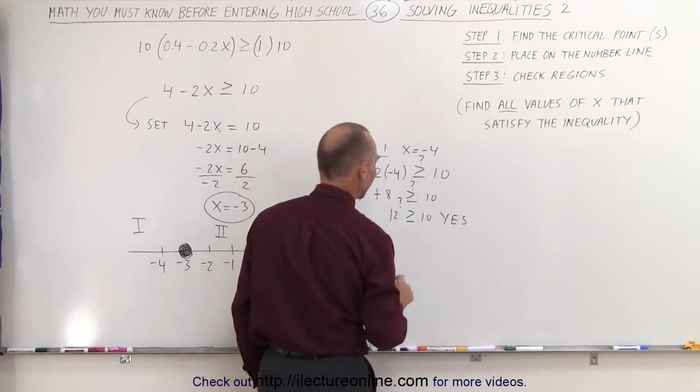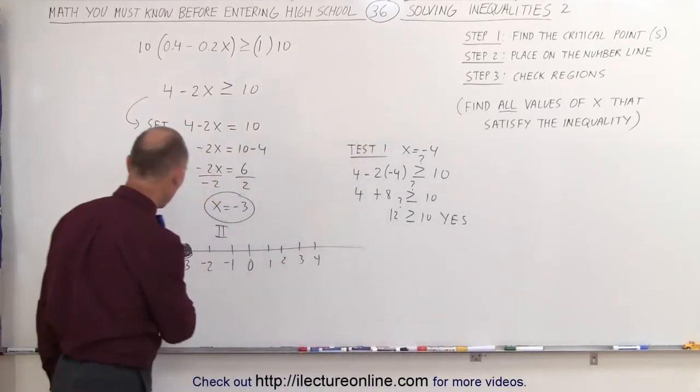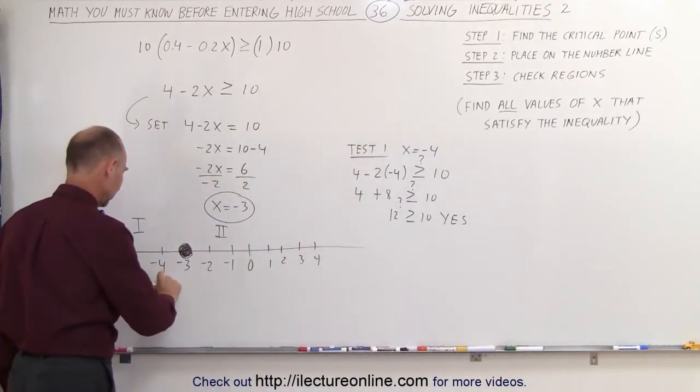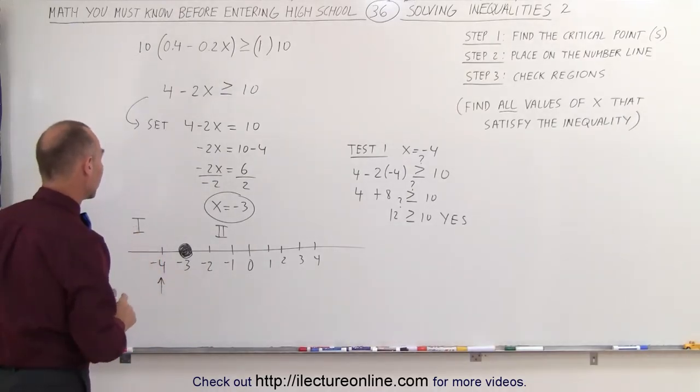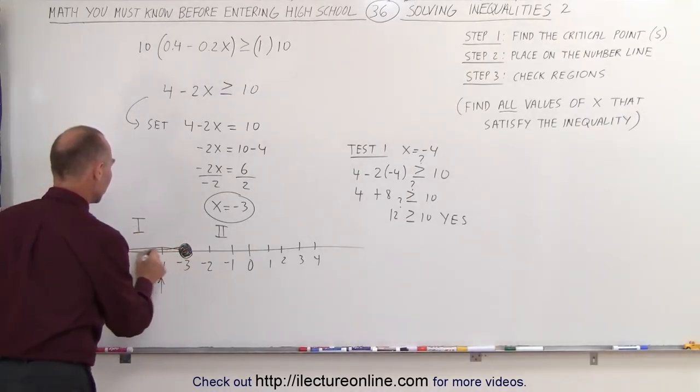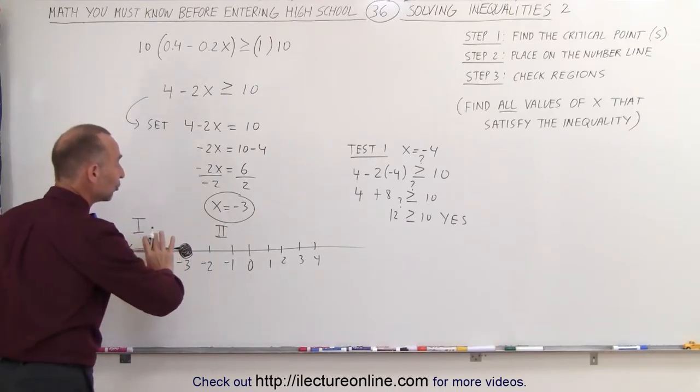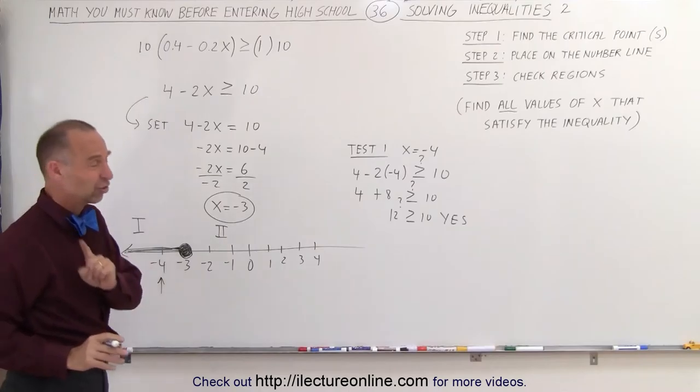That's what we're trying to find out. Which means we picked the point from the region that satisfies the inequality. All the points to the left of that critical point satisfy the inequality. And we presume none of the points on the right. But let's check and see.